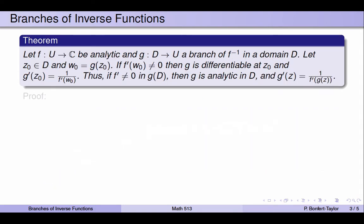Here's a theorem we're going to prove: if f is analytic and g is a branch of f inverse, and we pick a point z₀ such that its image under g is called w₀, and if f prime is non-zero at w₀, then g is differentiable at z₀ and its derivative is 1 over f prime at w₀. Let me draw a picture to make this clearer.